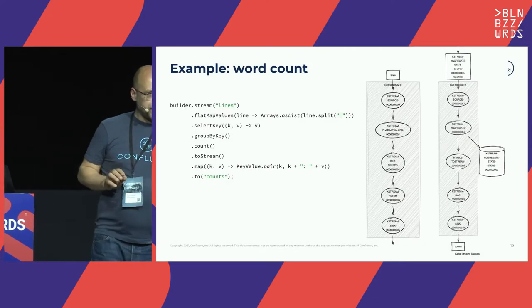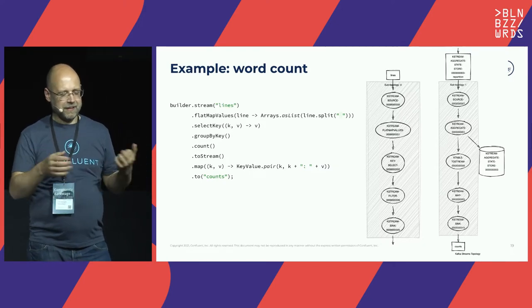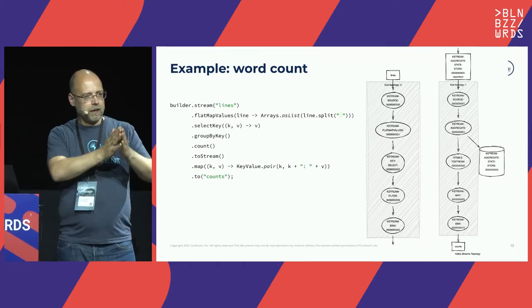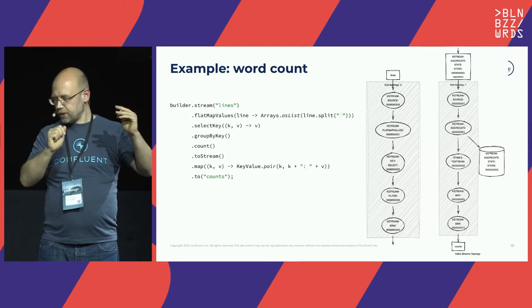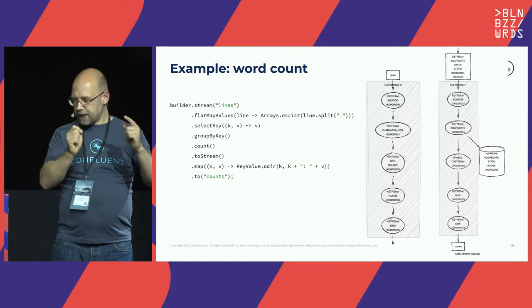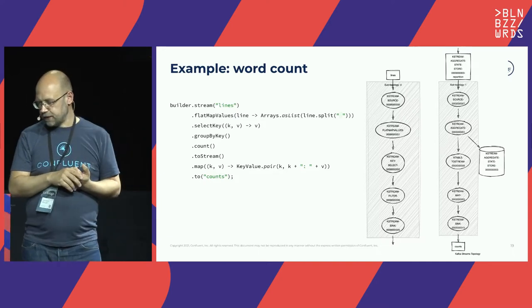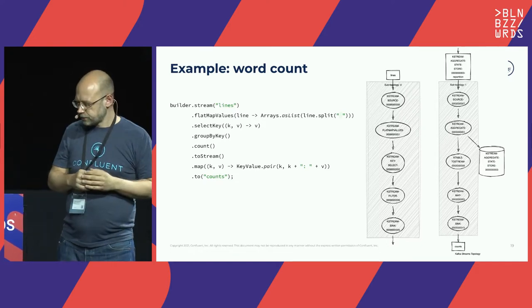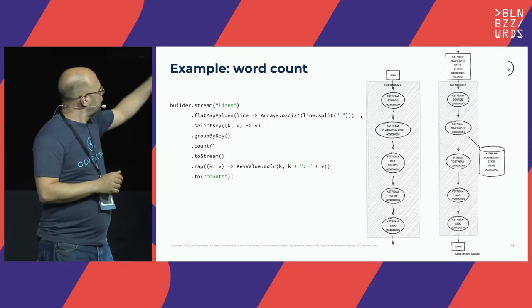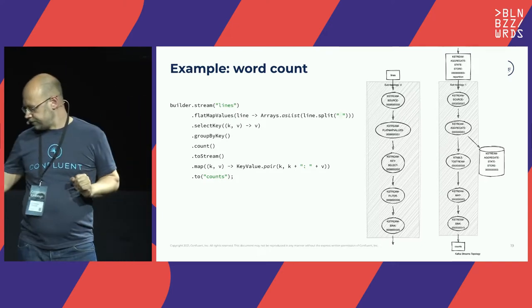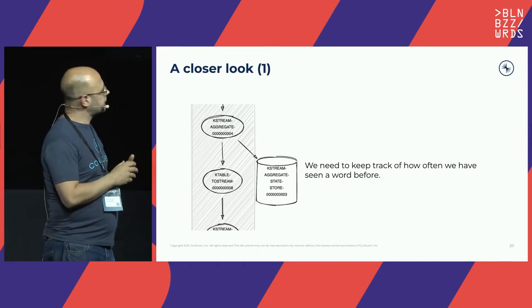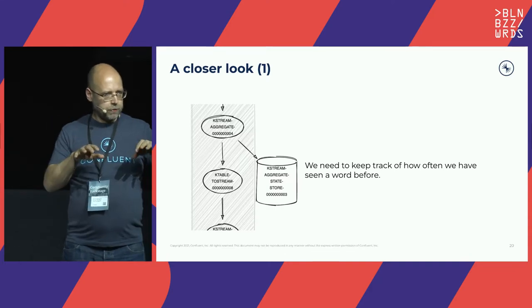Let's look at the hello world of Kafka Streams: word count. We open a topic of sentences, split into words, select the word as the key, do a groupBy, count how often we see each word, convert back to a stream, and output to a topic with the key and count together. The resulting topology already looks quite complex. Looking closely, we can see what we call a state store — needed because this is a stateful operation: to count a word I have to remember how often I've seen it before.